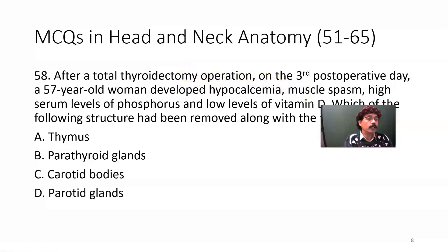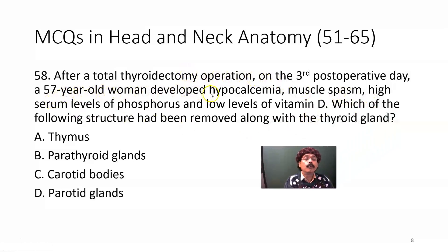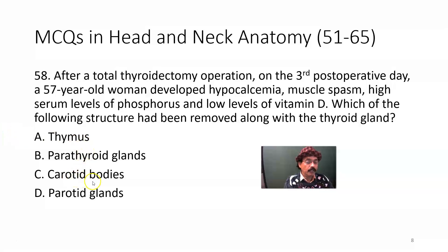After a total thyroidectomy operation, on the third post-operative day, a 57-year-old woman developed hypocalcemia, muscle spasm, high serum levels of phosphorus, and low levels of vitamin D. Which structure had been removed along with the thyroid gland? The thymus — that may be absent or atrophic in a 57-year-old woman. Parathyroid gland. Carotid body — no, it is present inside the bifurcation of the common carotid artery, so that is not the case. The answer is the parathyroid gland. Ideally, the surgeon tries to keep at least one or at least half of a parathyroid gland.